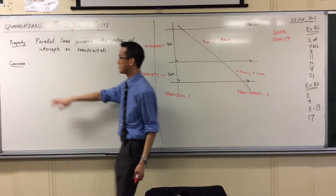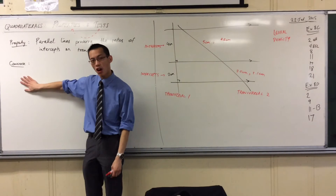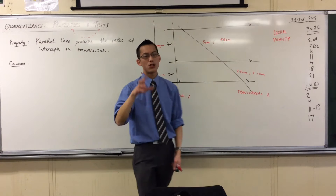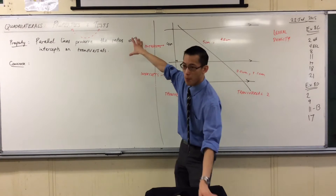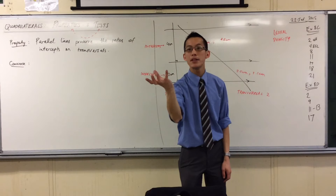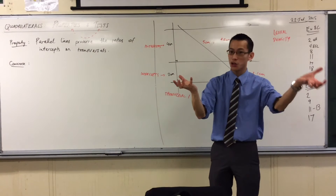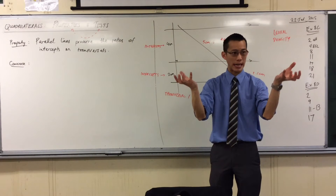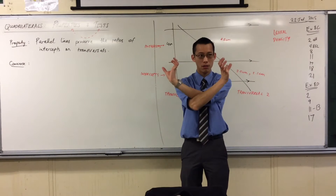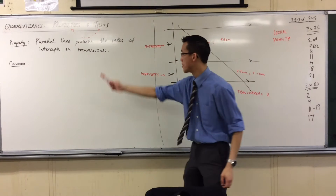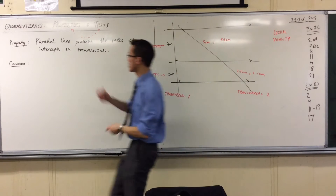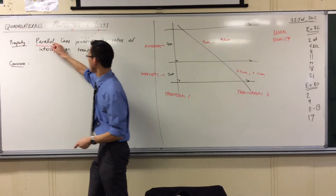The key to getting a converse out of a property or a theorem is to understand that every property, every theorem, has a premise and therefore a conclusion that you draw off of that premise. The converse is all about switching those — switching them. So what's the premise? What do we start with? And the answer is: the premise is parallel lines.